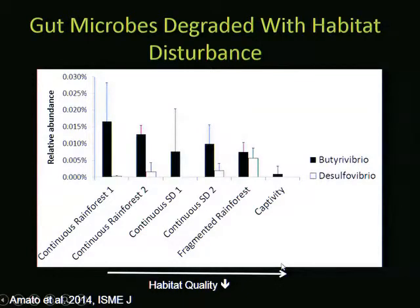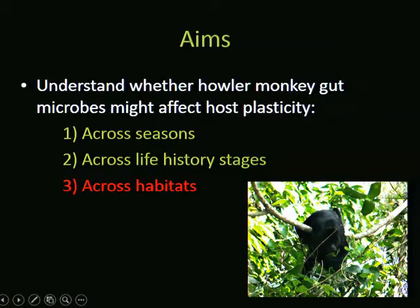These shifts in gut microbial communities across habitats are not beneficial—they may have negative effects on nutrition and health. The gut microbial communities are not helping howler monkeys be more plastic in the face of habitat disturbance. These compensatory mechanisms work across seasons and life history stages, but when habitat disturbance reaches a certain point, those gut microbial communities can't keep up and can't compensate.